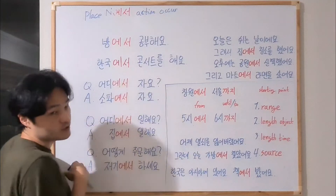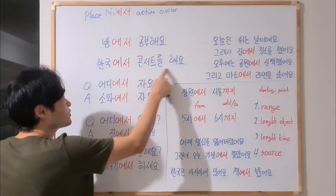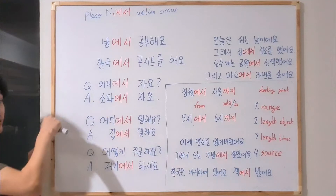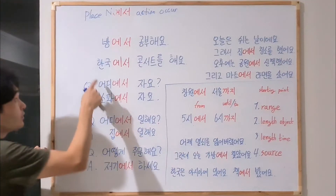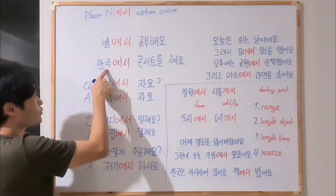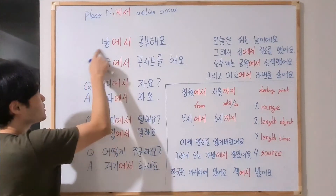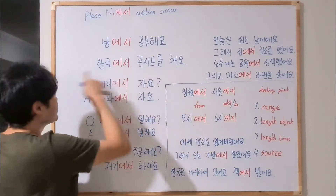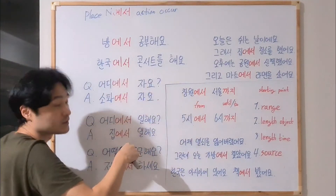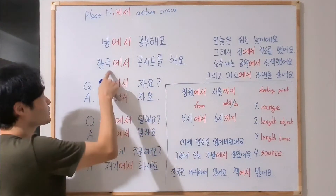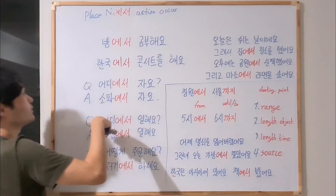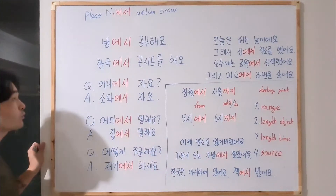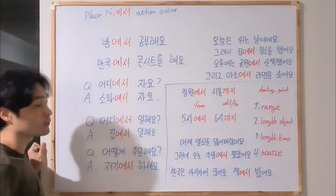콘서트 — it's a concert. 콘서트를 해요 — do the concert. Where? 한국. 한국 is the place where someone does the concert. So, 한국에서 콘서트를 해요 — do the concert in Korea.